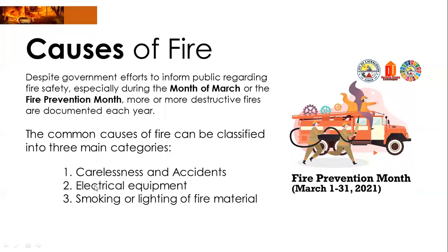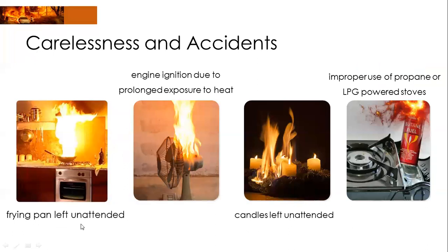What are the causes of fire? We have three: carelessness and accidents, electrical equipment, and smoking or lighting of fire material. Under carelessness and accidents: a frying pan left unattended, engine ignition due to prolonged exposure to heat, overheating of appliances, candles left unattended, and improper use of propane or LPG-powered stoves such as butane-powered portable stoves — they are supposed to be used only outdoors, not inside. Be responsible in using them.